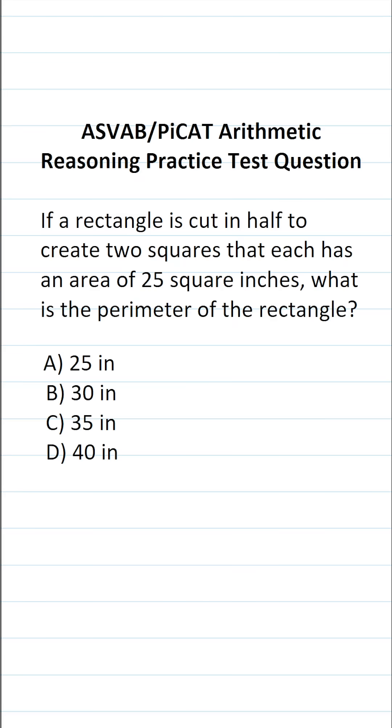This arithmetic reasoning practice test question for the ASVAB and PICAT says, if a rectangle is cut in half to create two squares that each has an area of 25 square inches, what is the perimeter of the rectangle?